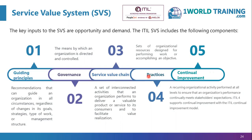While in V3 we have the concept of processes, in ITIL 4 we have the concept of practices, which are not just about processes but a set of other types of resources also, like people, technology, information, and suppliers and partners. The fifth element is continual improvement, which is an approach or model for improvement. It is a recurring organizational activity performed at all levels to ensure that an organization's performance continually meets stakeholders' expectations. ITIL 4 supports continual improvement with the ITIL continual improvement model.